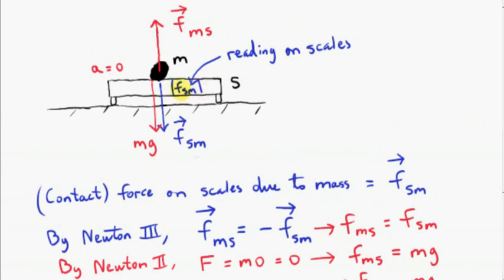Well, everyday scales give readings in kilograms. Of course, we're talking about a force here. So the reading on the scales would be in newtons. But of course, to convert the reading from newtons to mass in kilograms, we just use the fact that the force on the scales due to the mass is equal to mg.